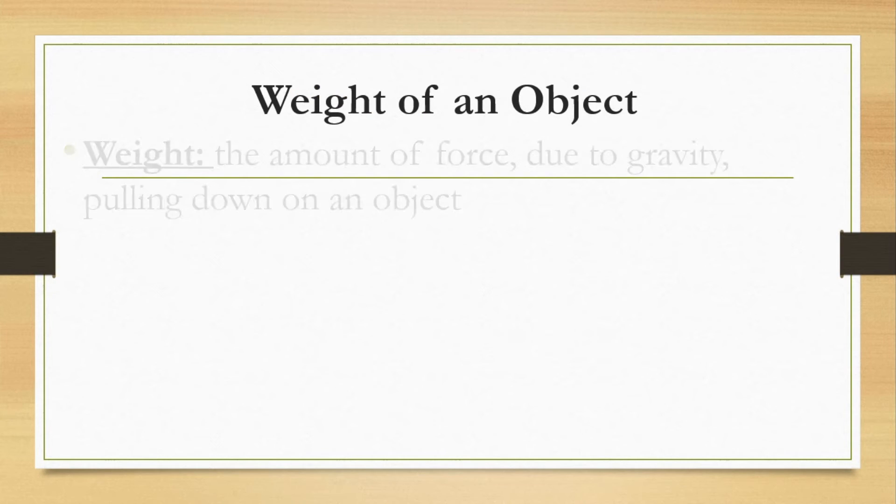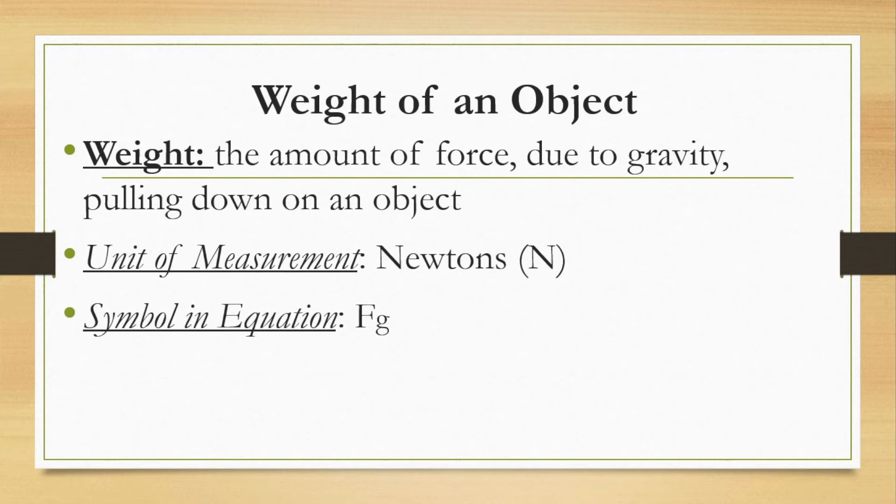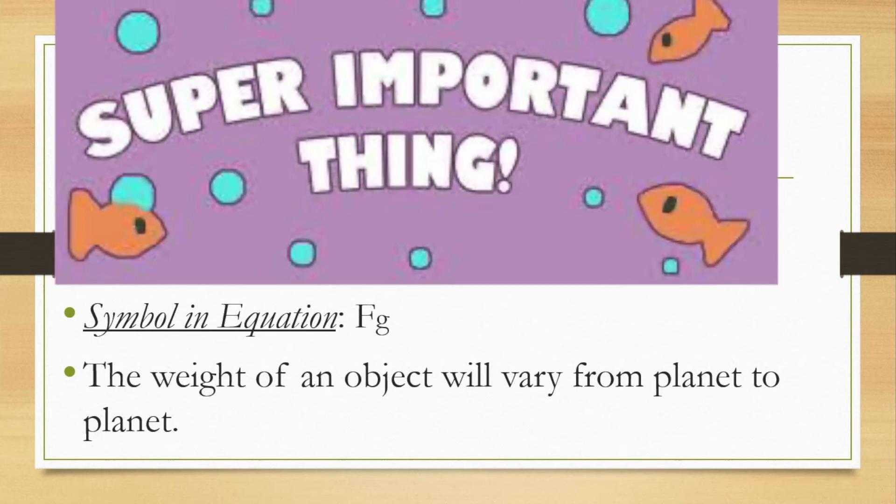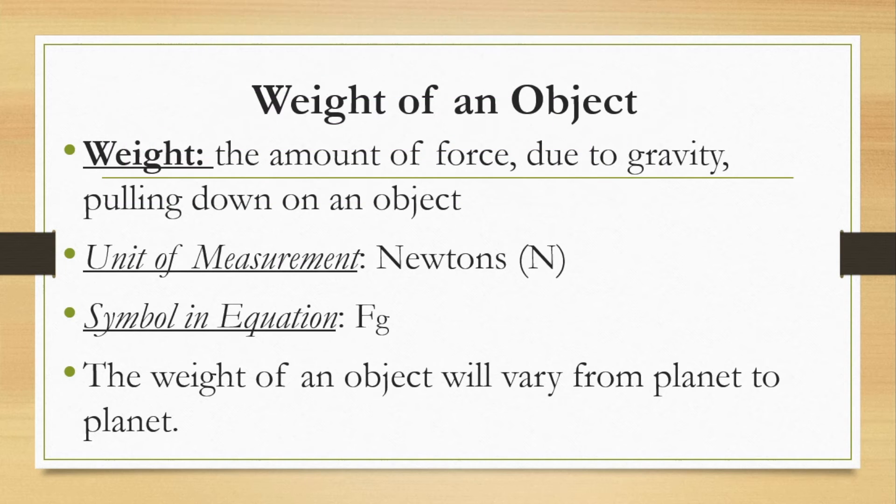Let's talk about weight of an object. Weight of an object is referring to the amount of force due to gravity that is pulling down on an object. The unit of measurement for weight is going to be Newtons. The reason being that weight is a force and the units of force are Newtons. We'll abbreviate with a capital letter N. The symbol for weight is going to be Fg. Sometimes we're going to refer to weight as just force gravity because it's the force due to gravity. The weight of an object will vary from planet to planet. The reason being different planets have different gravities, therefore the weights are going to be different.